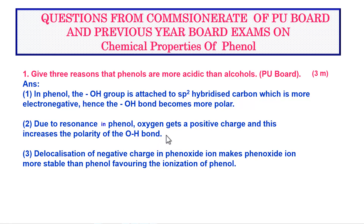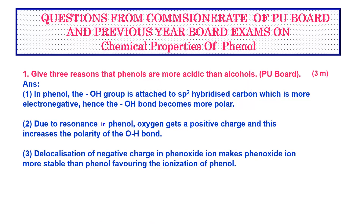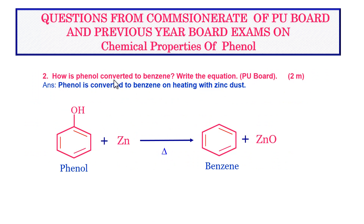This we have understood in the memory map by the resonating structures of phenol, where we observed charge separation taking place. The third important reason is the delocalization of the negative charge in phenoxide ion, which makes phenoxide ion more stable than phenol, favoring the ionization of phenol. All three reasons contribute to the more acidic nature of phenol than alcohols.